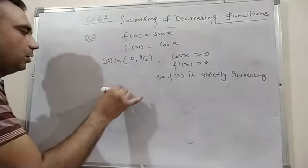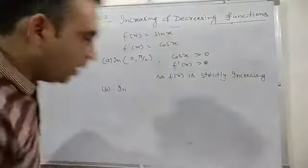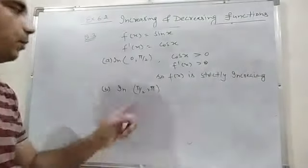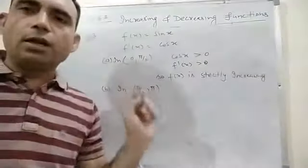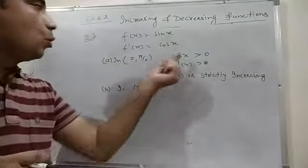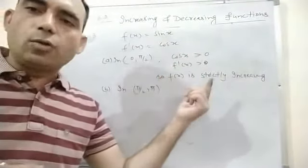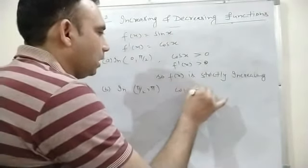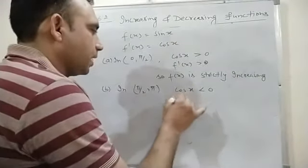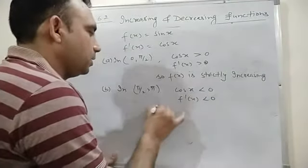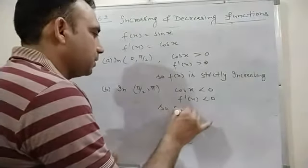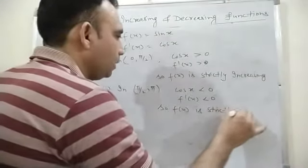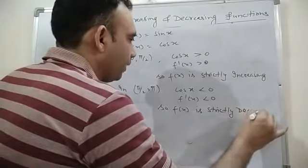Part b: the given interval is (π/2, π). This is the second quadrant, where cos x is negative. So cos x is always less than 0, which implies f'(x) < 0, so f(x) is strictly decreasing.